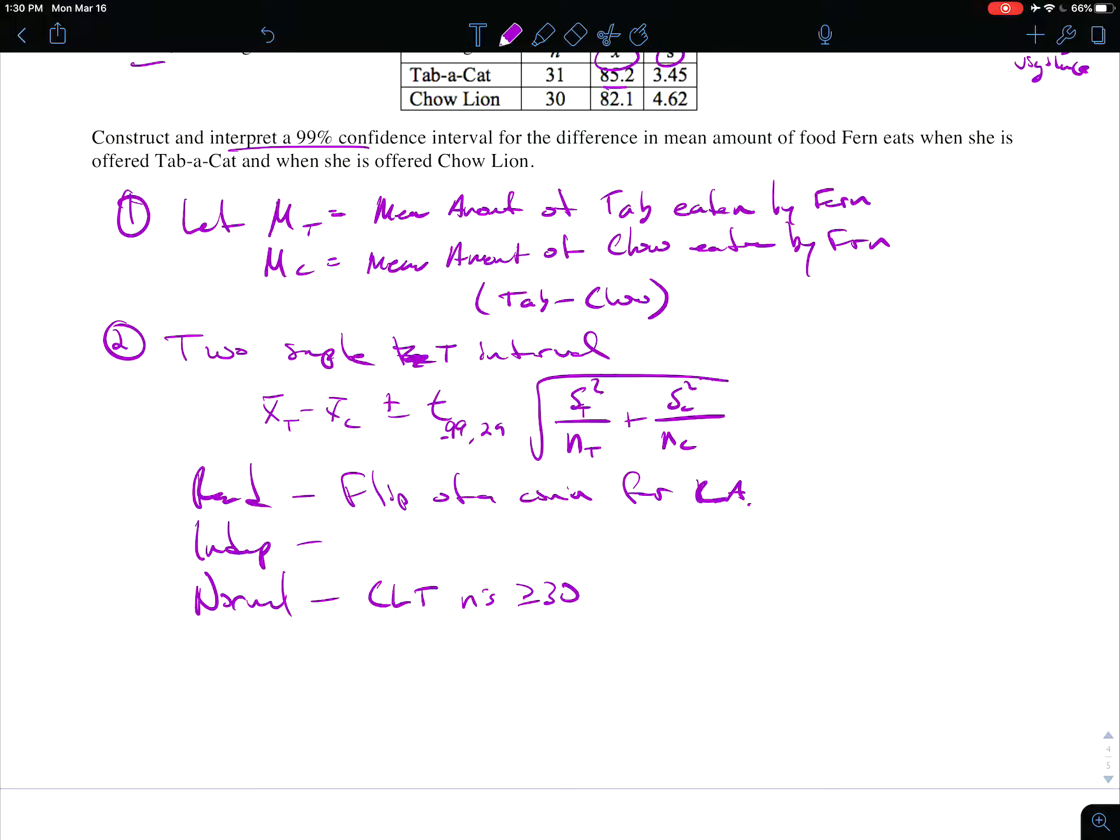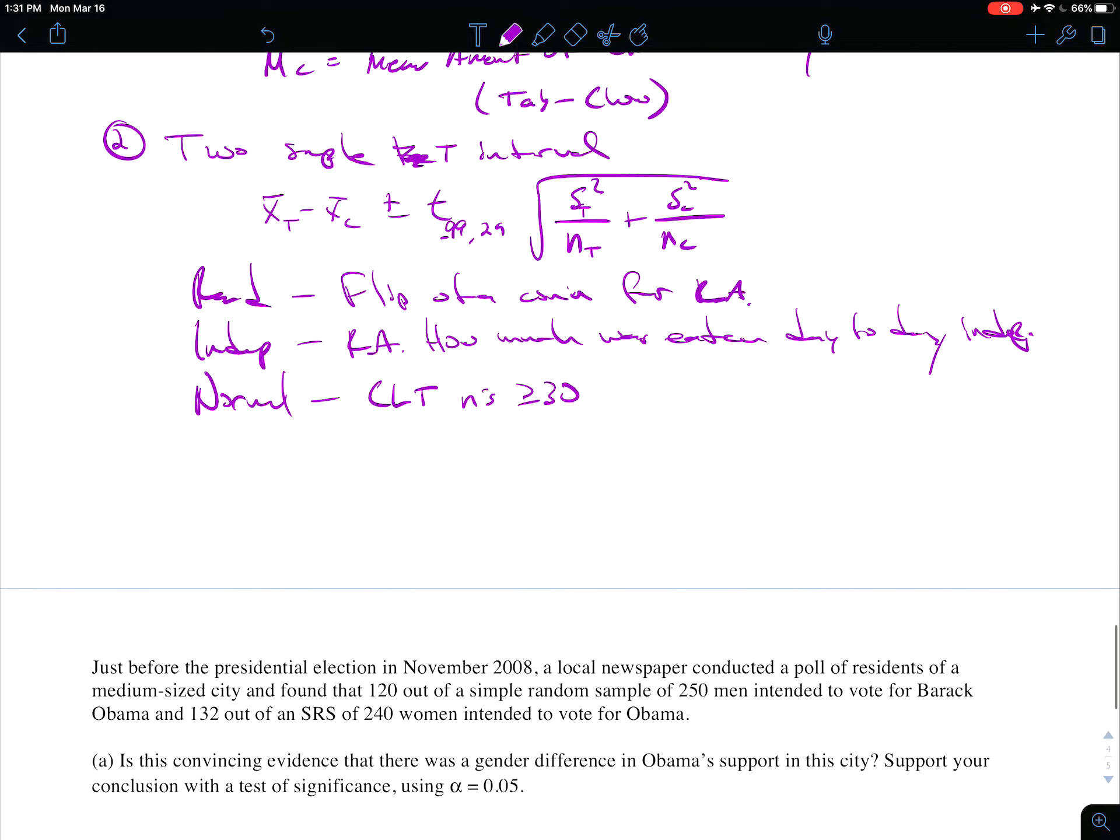Let's see, flip of a coin for the random assignment satisfies the randomness, and then the independent because, you know, we could attribute the random assignment to the independent. So random assignment, and that therefore how much was eaten day to day is independent, right? Because it could have been back-to-back Tab days or Tab-Chow-Tab, you know, all those kinds of things. All those are satisfied, so now we can get into the calculation.